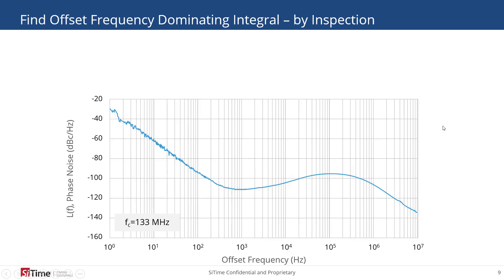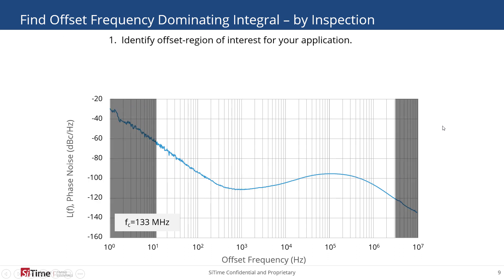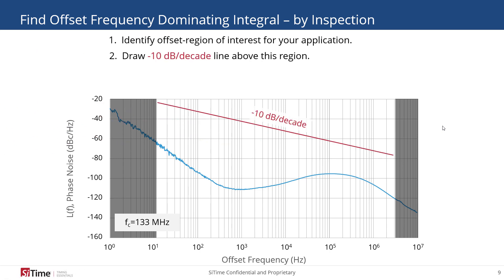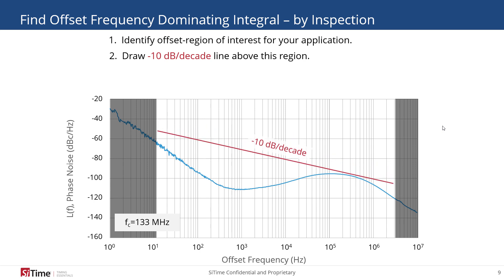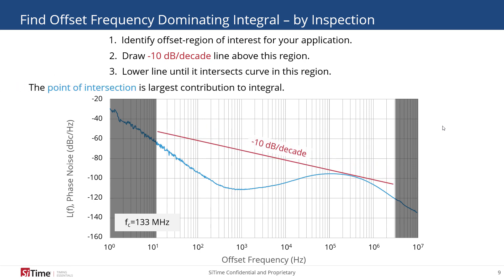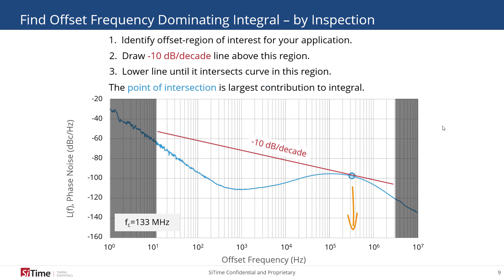To implement this, we first apply a system filter to filter out those regions of the phase noise curve that our system doesn't observe, then we draw a minus 10 dB per decade line above the phase noise curve, lower it until it intersects the curve, and then identify the region that it first intersects. This is the region of the phase noise curve that dominates the phase jitter value.